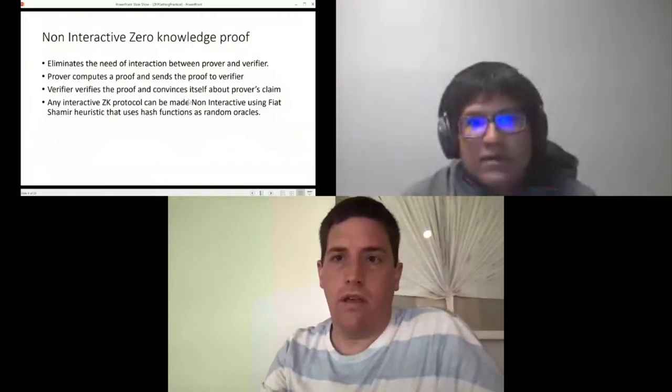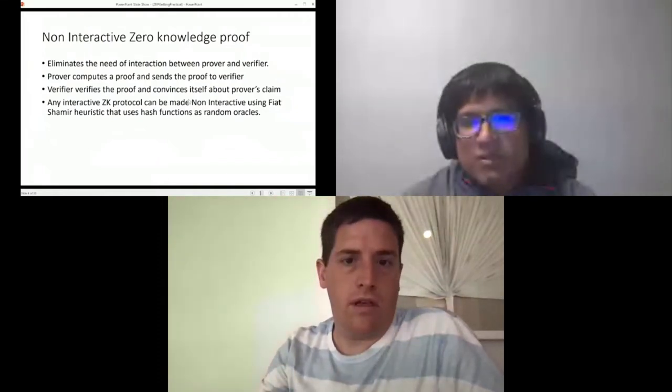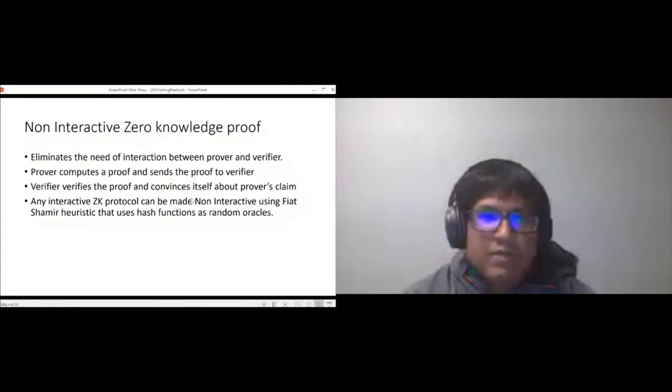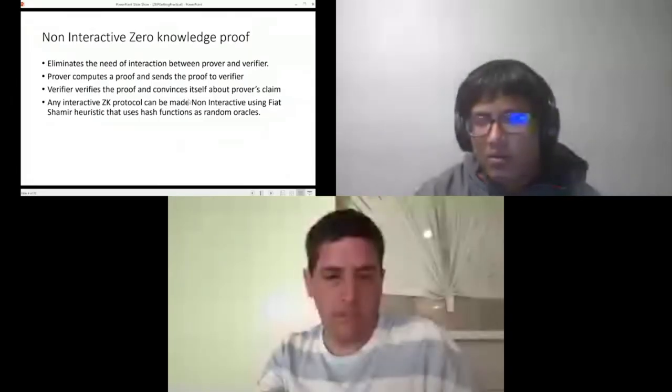Any interactive zero-knowledge protocol can be made non-interactive using Fiat-Shamir heuristic that actually uses a hash function as a random oracle. What it essentially does is whenever the verifier sends some random challenge, the prover can actually simulate those challenges using the random oracle.